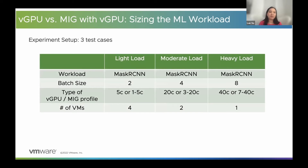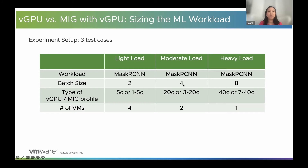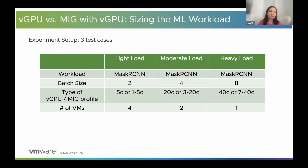In this setup experiment, we are not sizing the number of virtual machines per GPU anymore, but we're sizing the workload — running different workloads with different characteristics. We use the same Mask R-CNN for easy comparison, but this workload utilizes the GPU very differently. For lightweight, we use a small batch size with less compute. For moderate and heavy load, a bigger batch size is used. In the heavy load case, the batch size fully utilizes the GPU. Also, different batch sizes enable more or fewer VMs to run the same workload, so we stretch the GPU as much as possible.